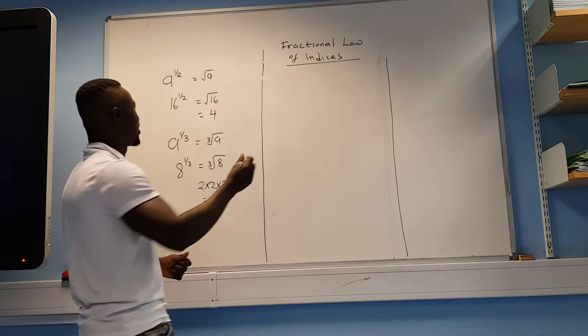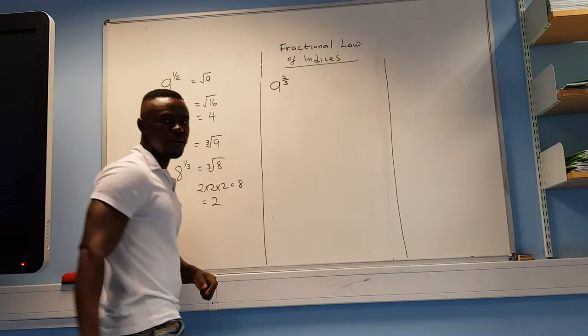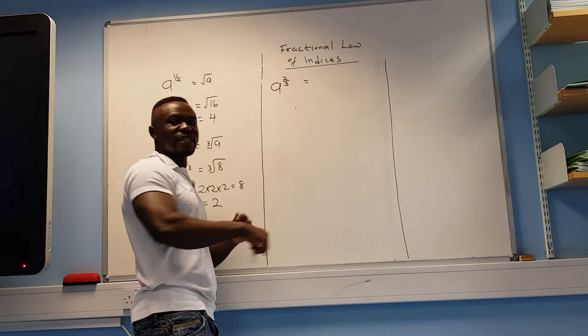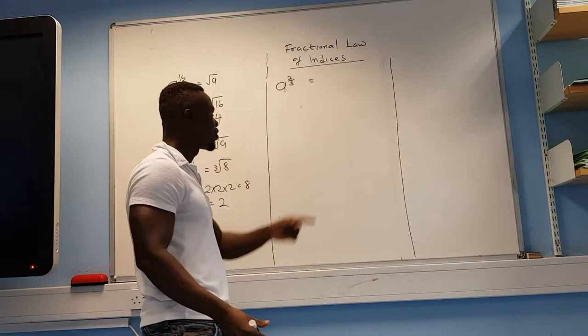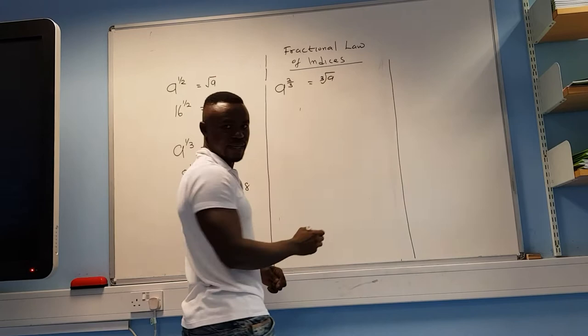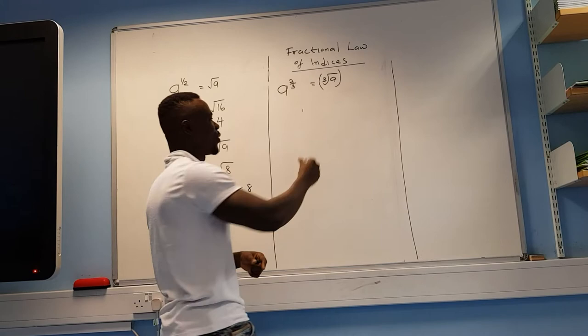Now let's look at this type: a to the power of 2 over 3. In the law of indices, the denominator — the bottom number — tells you what root to take: square root, cube root, fourth root, fifth root, and so on. Because this is 3, we take the cube root of a. Then the numerator tells you what to do after — in this case, square it.